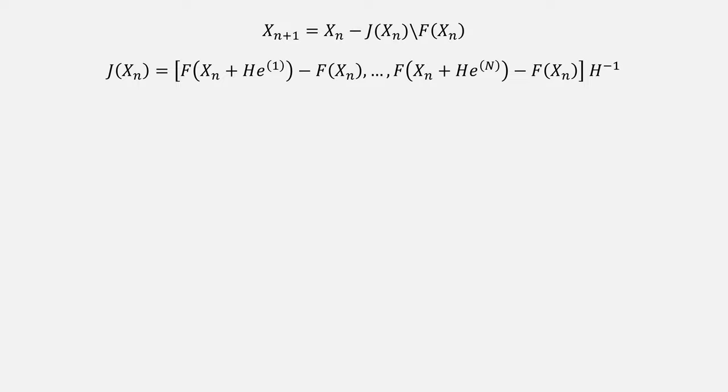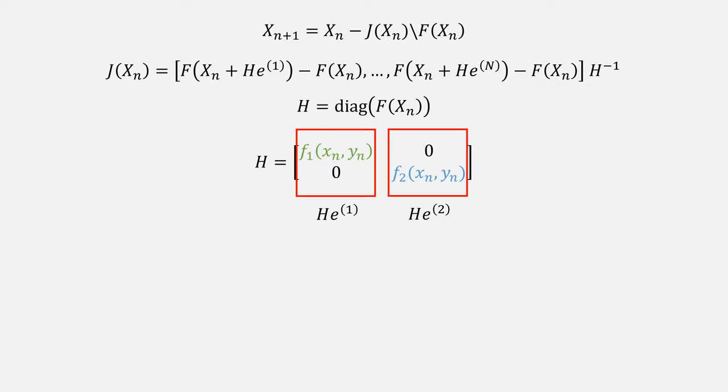But with Traub's approach, there are no derivatives. We instead need another matrix called H, which is a diagonal containing the values stored in f of x. We'll need each of the columns in that matrix. And to find the inverse of H, we simply take 1 over every term.